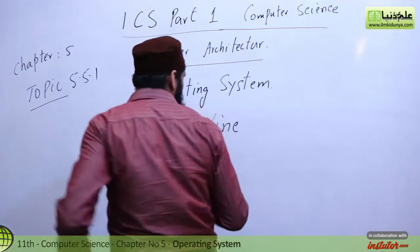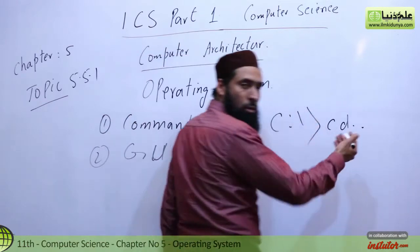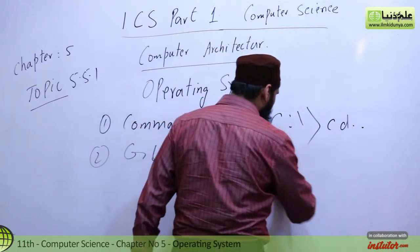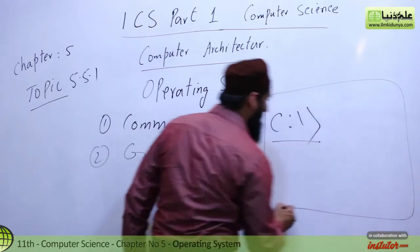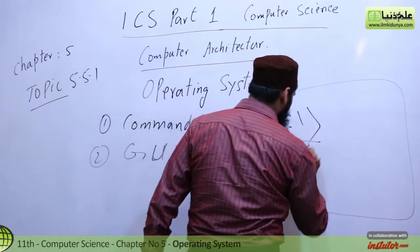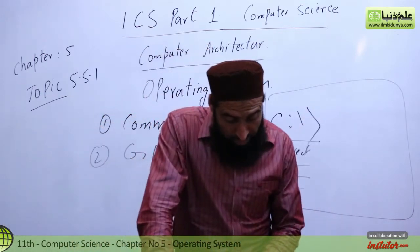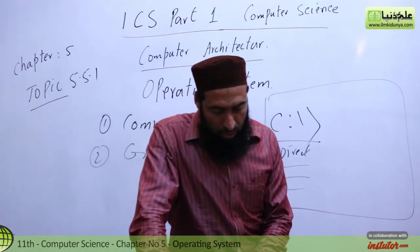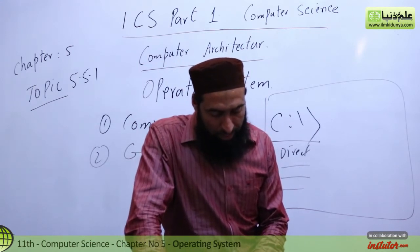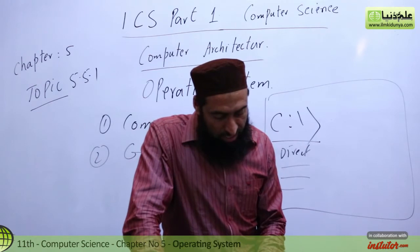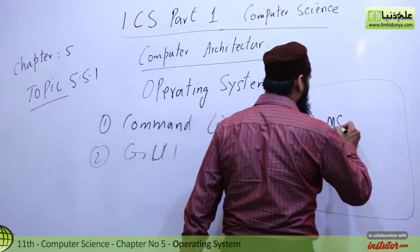In the command line interface, you have a command line — this is like the C slash prompt. This is how you write a CD, and you want to write a directory. There is a black screen with different types of files. By typing a command using a keyboard, each command given to the operating system activates one of the many programs in the operating system. Such is the interface command prompt by MS-DOS.